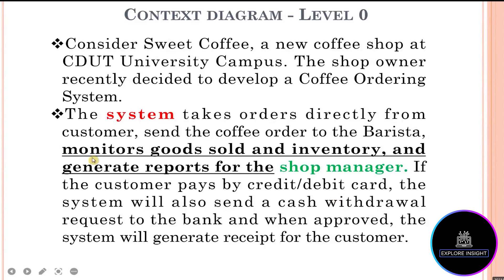Third on the line: it monitors goods sold and inventory and generates reports for the shop manager. We'll paraphrase the data flow label for this relationship as 'management reports.' So the coffee ordering system sends management reports to the shop manager.